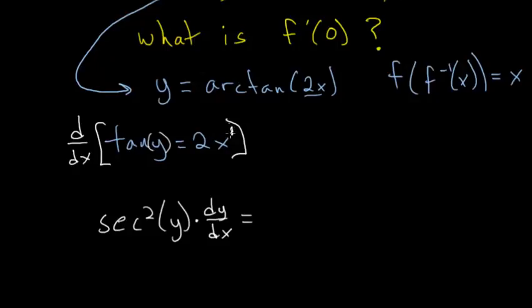So this is x to the first. We'll bring the 1 down in front. So we have 2 times 1, and then multiply that by x to the 1 minus 1 power, or x to the 0 power, which is 1.